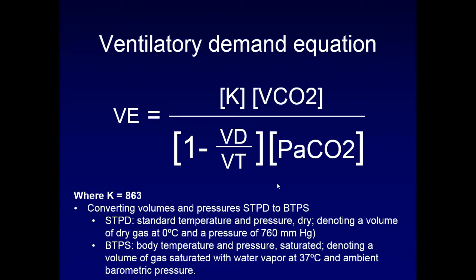Starting with the ventilatory equivalents of carbon dioxide: this is the ventilatory demand equation with lots of variables. We often quote this in the ICU for minute ventilation, typically plugging in arterial carbon dioxide. But other factors include VCO2 production, a constant of typically 160 that converts from standard temperature and pressure to body temperature and pressure, and the dead space to tidal volume ratio in the denominator.